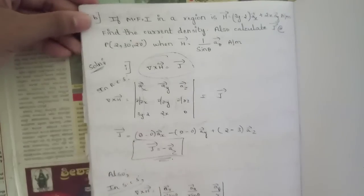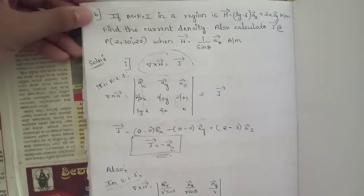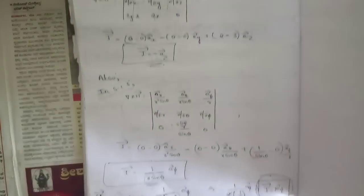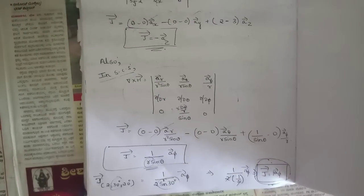That is the final value of J = aφ. This was a model paper problem, so please note it down.